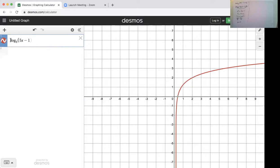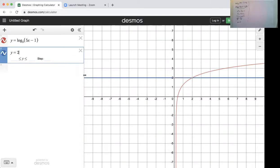We'll call that y equals log base 3 of 5x minus 1, and I want to see when does y equal 2. When do they agree? They agree here. We see that point.